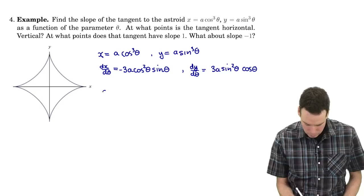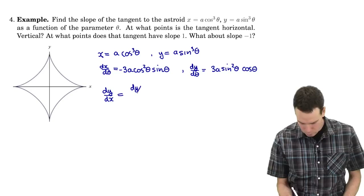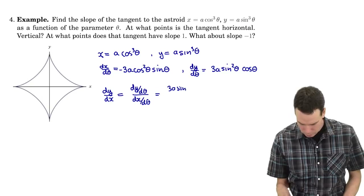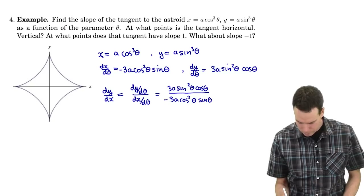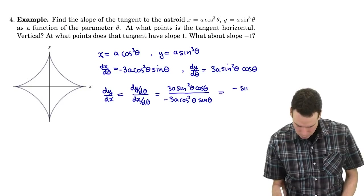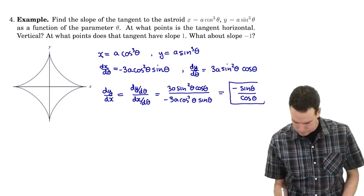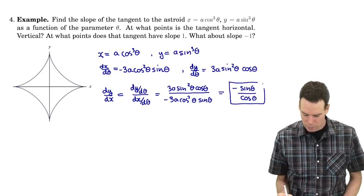Therefore the derivative of y with respect to x equals dy/dθ divided by dx/dθ, which is 3a sin squared theta cos theta over negative 3a cos squared theta sine theta. A lot of stuff cancels, leaving us with a negative sign, a sine on top and a cosine in the bottom. So there's our derivative dy/dx in terms of the variable theta.